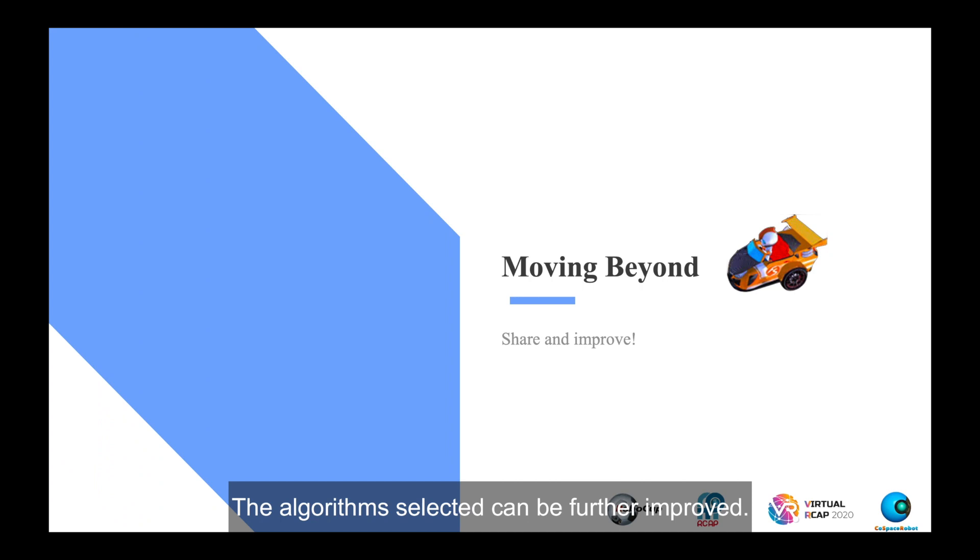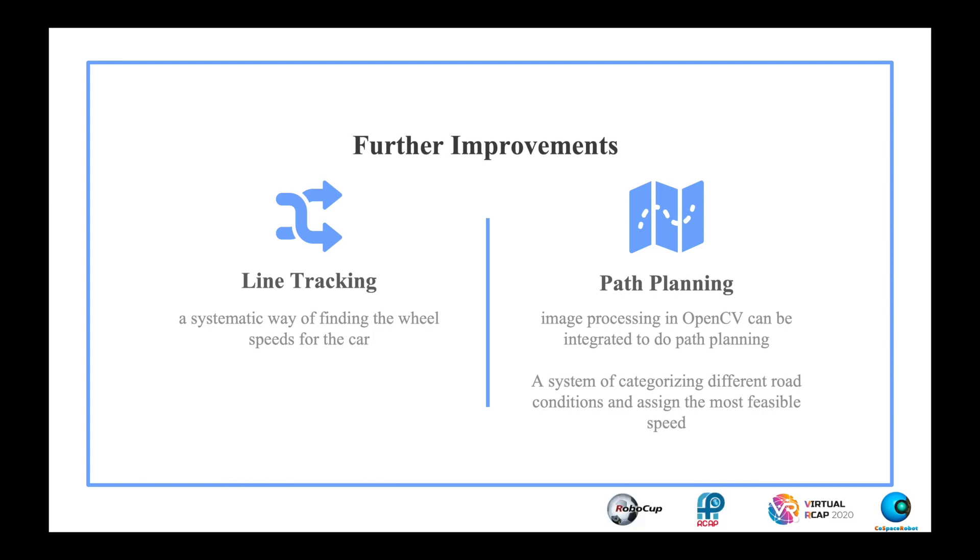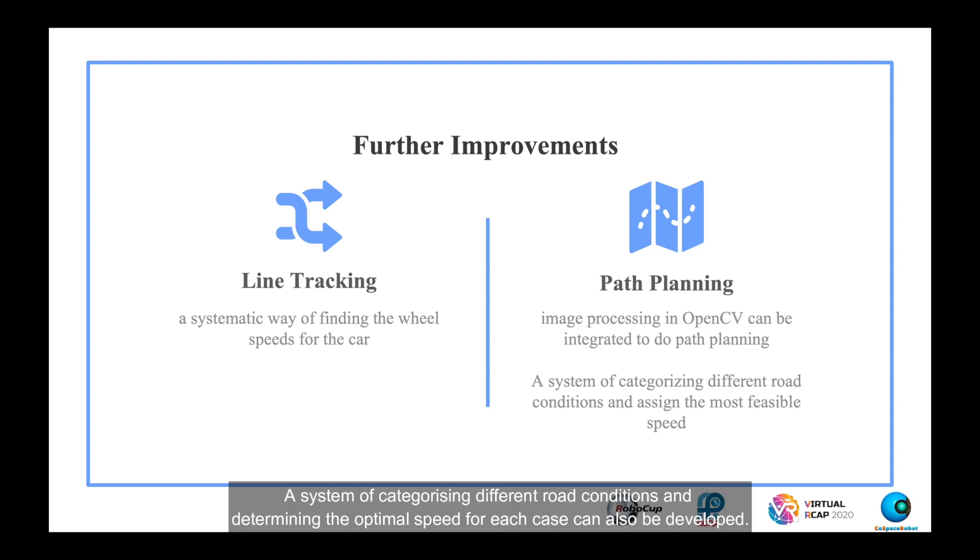The algorithms chosen can be further improved. For line tracking, this will be done through the development of a systematic way of finding the wheel speeds for the car, especially a formula to calculate the proportion of base speed to be used in each scenario. For the application of path planning, image processing in OpenCV can be integrated to generate maps that allow algorithms to analyze and find optimal path. A system of categorizing different road conditions and determining the optimal speed for each case can also be developed.